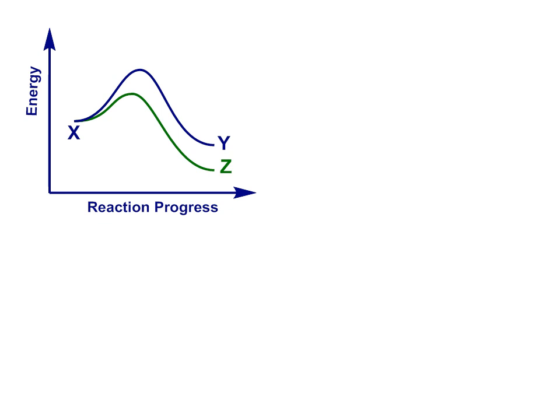Now to mix it up a bit, sometimes it's helpful to show two different reaction profiles over the top of each other on the same set of axes as a way to compare two different reaction paths from the same starting material. In this example, two routes from starting material x each lead to different products, y and z.